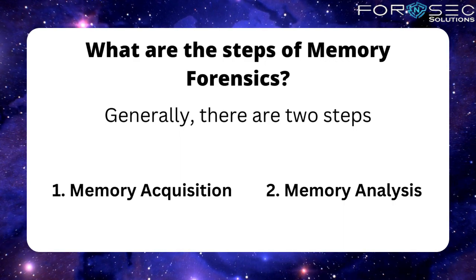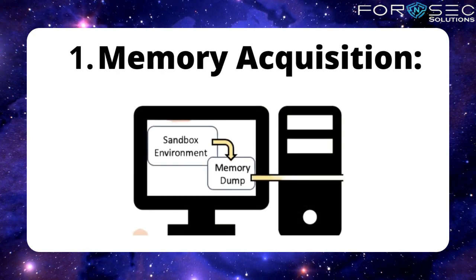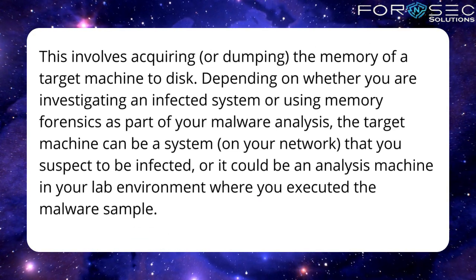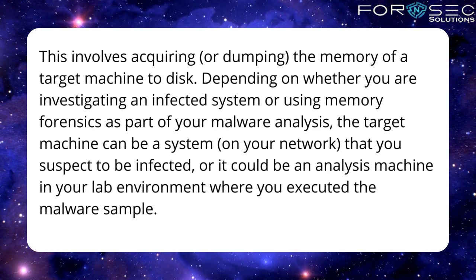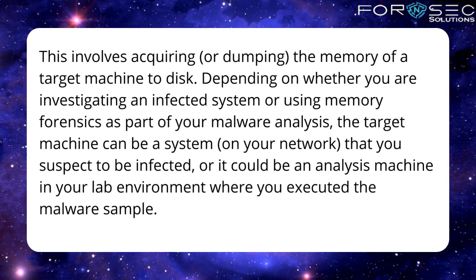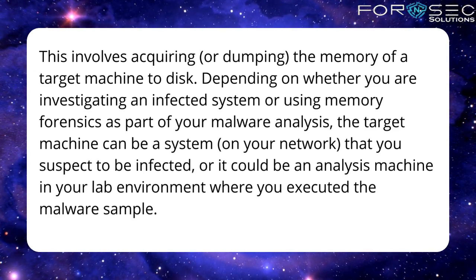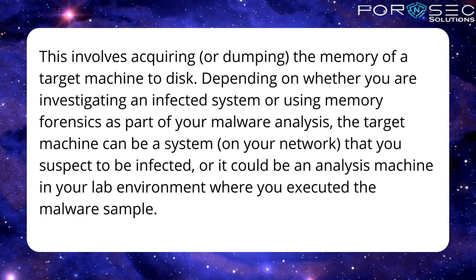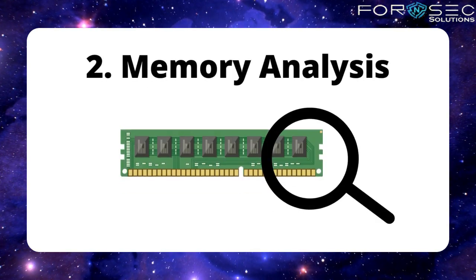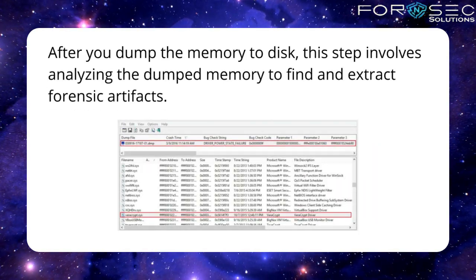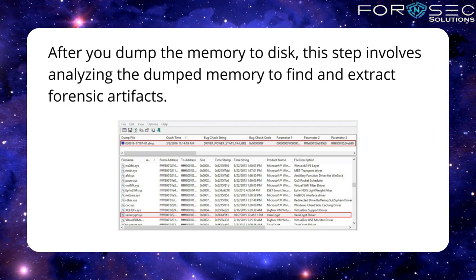So what are the steps of memory forensics? Generally, there are two steps: memory acquisition and memory analysis. Memory acquisition involves acquiring or dumping the memory of a target machine to disk, depending on whether you are investigating an infected system or using memory forensics as part of your malware analysis. The target machine can be a system that you suspect to be infected, or it could be an analysis machine in your lab environment where you executed the malware sample. Second comes memory analysis — after you dump the memory to disk, this step involves analyzing the dumped memory to find the extracted forensic artifacts.